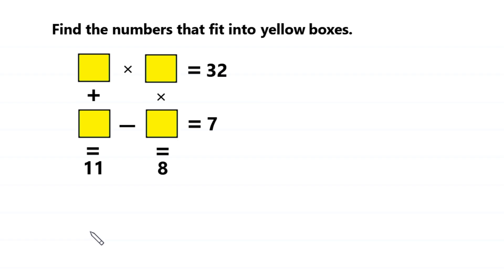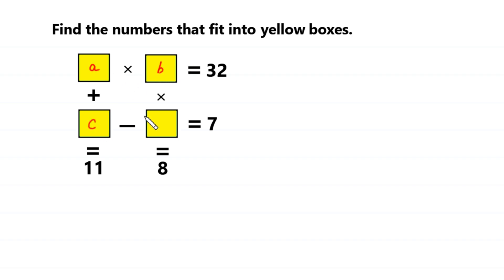Hello. Welcome to how to solve this math puzzle. We need to find the numbers that fit into yellow boxes such that all the equations become true. To do that, we label this box as A, this box as B, this box as C, and this box as D. So we have 4 variables and we have 4 equations.